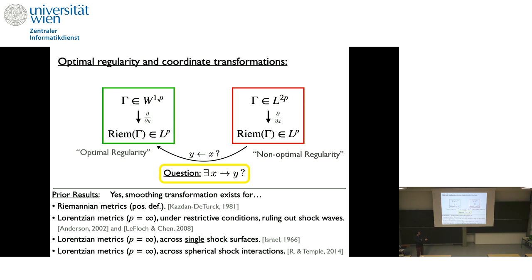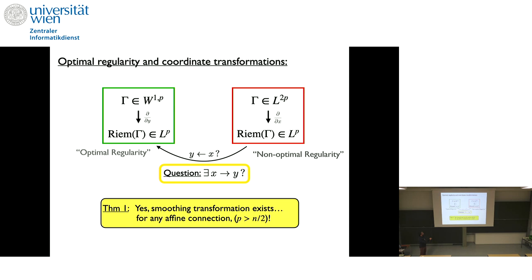You can't use the Kazdan-Warner method because they go to harmonic coordinates where the Ricci tensor turns into a Laplace operator — good, elliptic theory — and they lift the regularity to optimal. But in the Lorentzian setting, you have the wave operator that propagates irregularities from the data, so the method is inconclusive. We had to use something else, and fortunately what we found is more general than general relativity. Our theorem: the answer is yes, you can always go from the red box to the green box for any affine connection, as long as p is strictly greater than n/2.